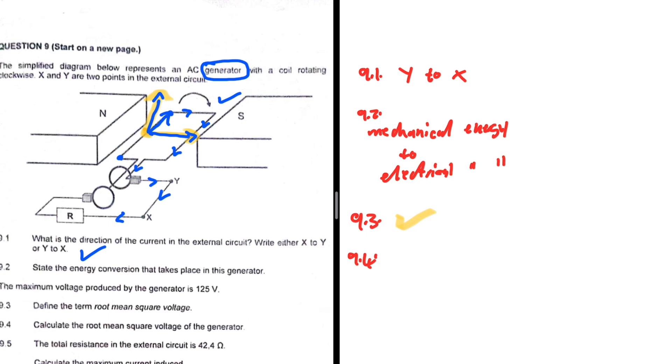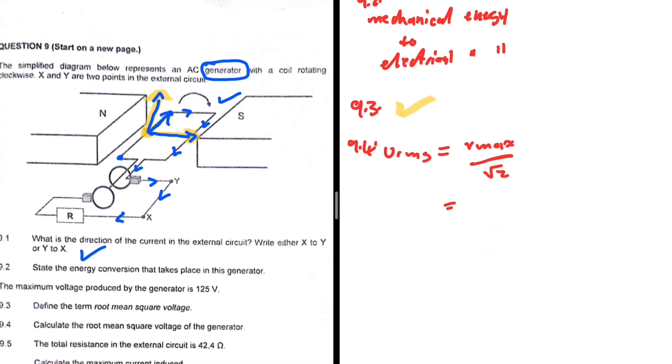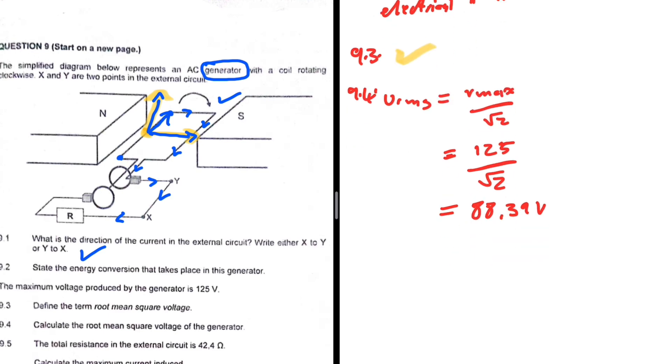9.4, calculate the root mean square voltage of this generator. So we are looking for V_rms. We know that it is V_max divided by square root of 2. If we substitute, V_max is 125 divided by square root of 2. Let me take a look: 125 divided by square root of 2, I'm getting 88.39 volts. So that is the root mean square voltage.